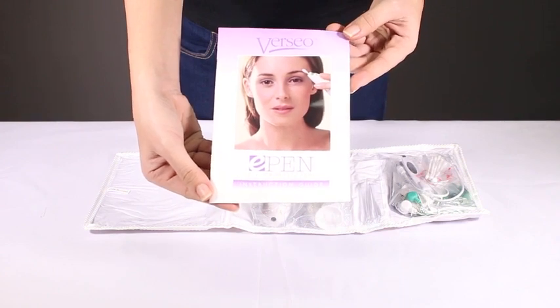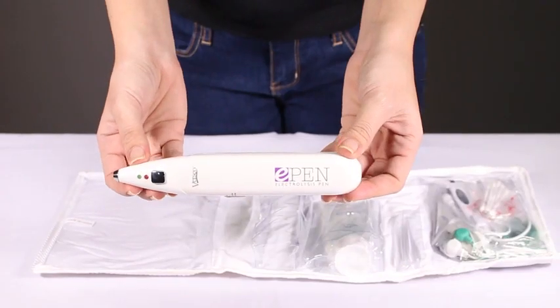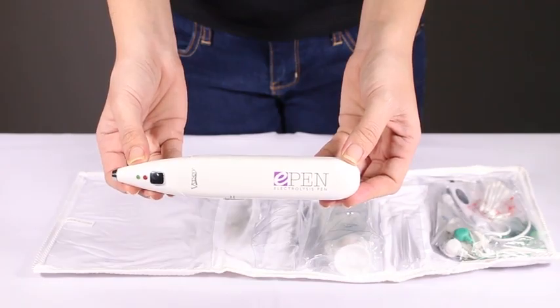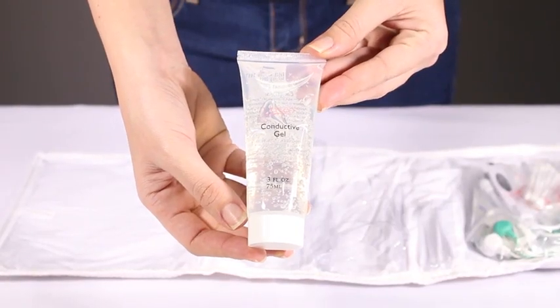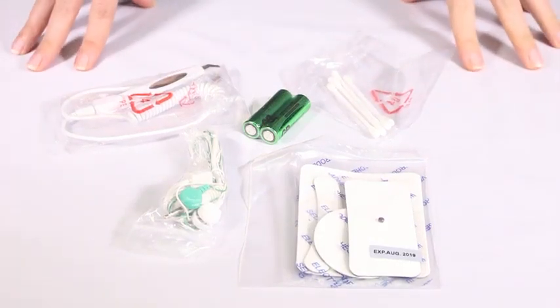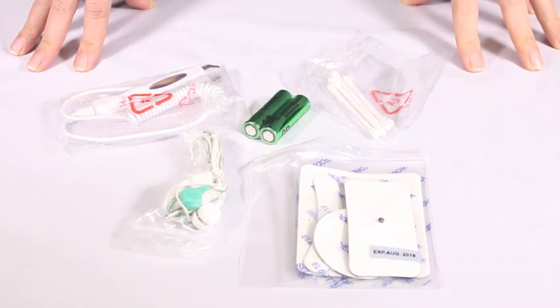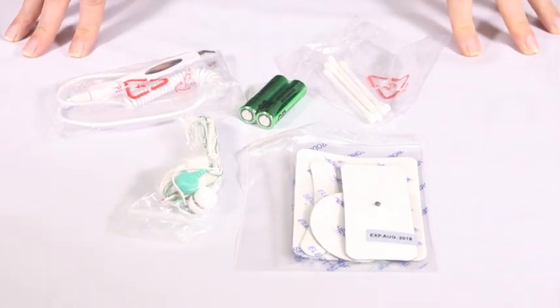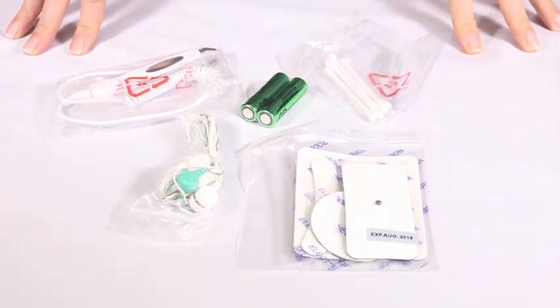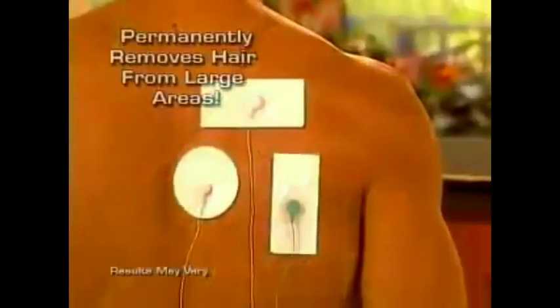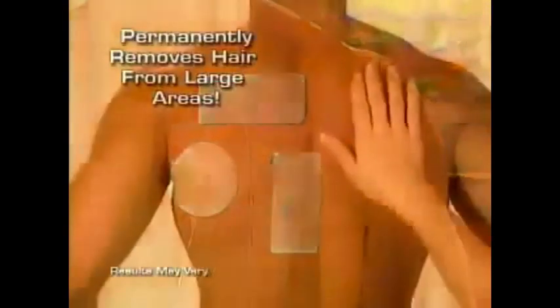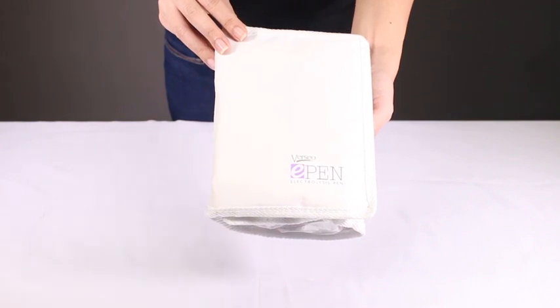Your Versio E-Pen Electrolysis contains the manual, the wand, conductive gel, AA batteries, special tweezers, pad connectors, q-tips, and detachable conductive patches designed to permanently remove hair from large areas for even faster results. All in a convenient fold soft pouch.